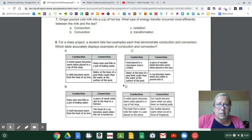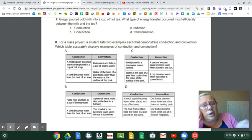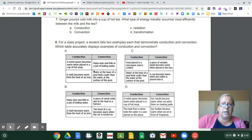Number eight. For a class project, a student lists two examples each that demonstrate conduction and convection. Which table accurately displays examples of conduction and convection? A, a metal spoon becomes warm when placed in a cup of hot soup. Is that conduction when the metal is in the soup, when it touches it? And then it says a cloth becomes warm from the heat of an iron. Oh, that's touching. So A could be right so far, but let's look at convection. Pasta rises and falls in boiling water. We just had a question like that.